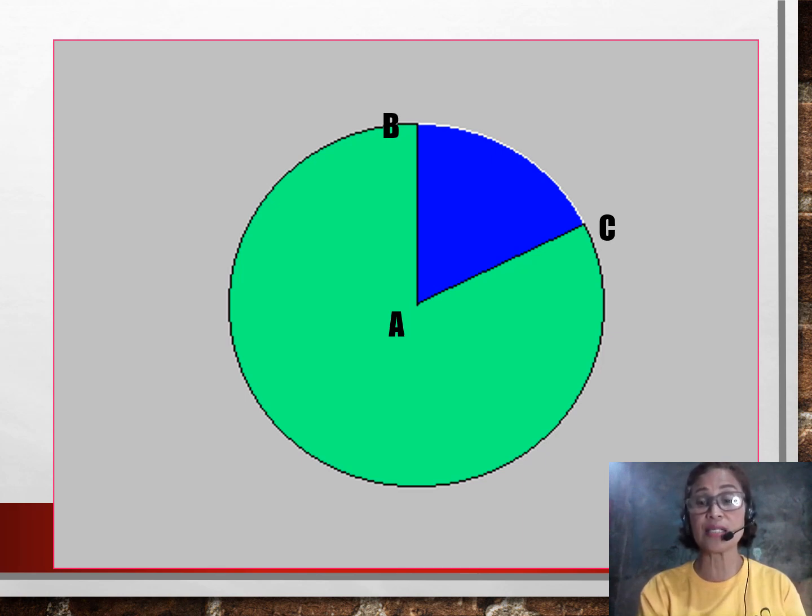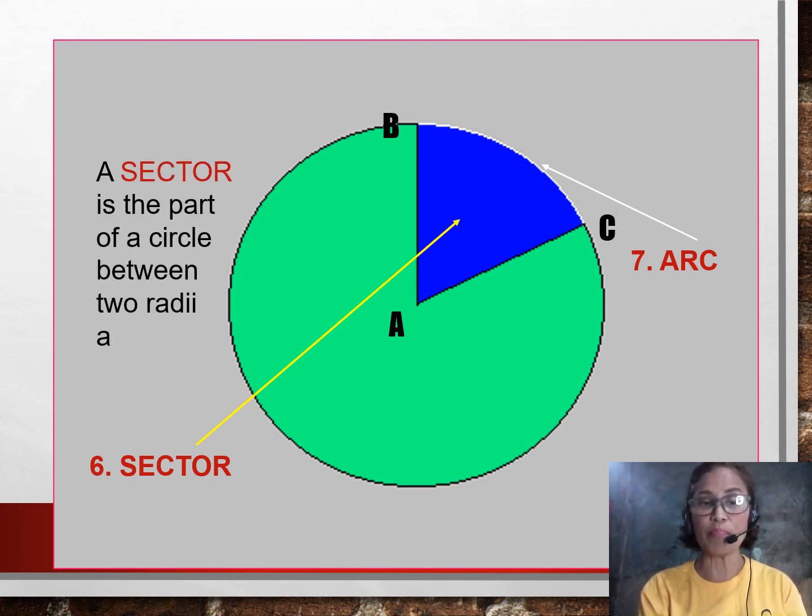The sixth and the seventh. We have our sector and the arc. What is a sector of a circle? A sector is a part of a circle between two radii. I have here my radius, Segment AB and Segment AC and the region that's colored blue is actually a sector. A sector is an area that is enclosed by two radii and an arc.